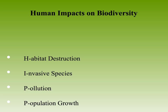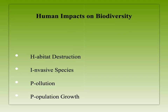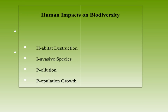Human impacts on biodiversity — you can remember these with the acronym HIP: Habitat destruction, Invasive species, Pollution, and Population growth. Let's talk about what each one does to the environment and how it affects biodiversity.